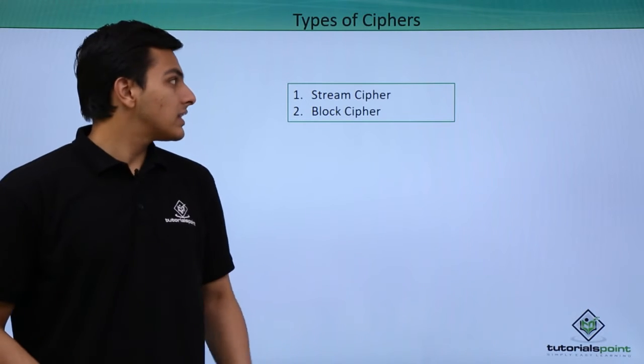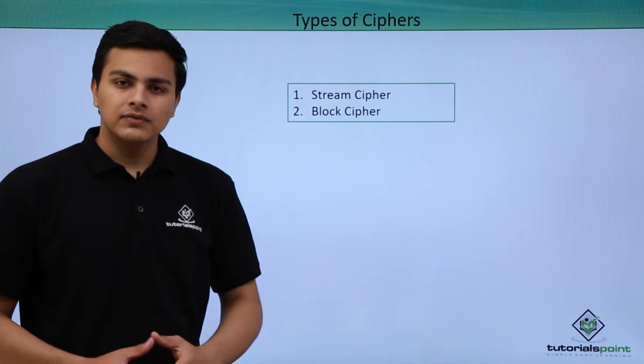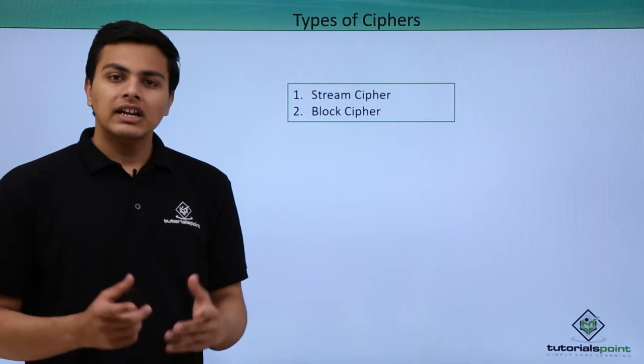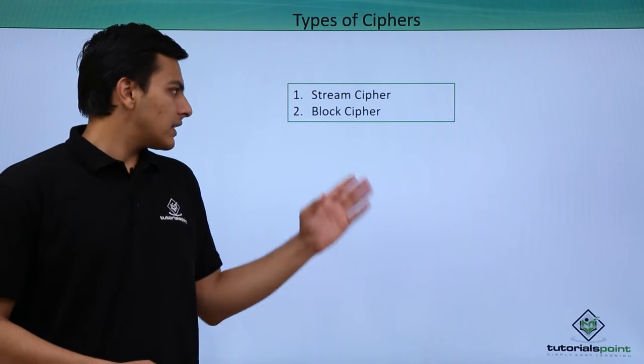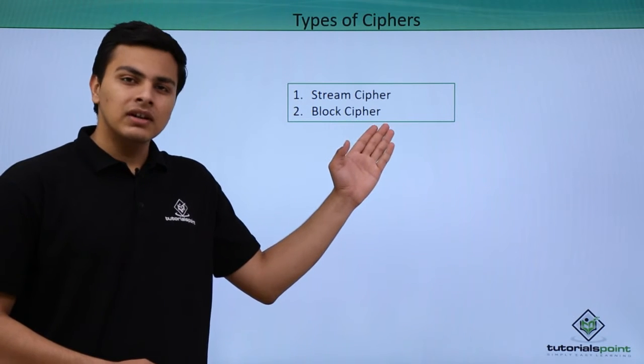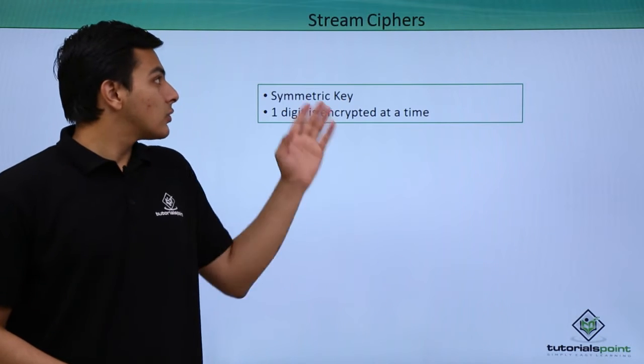Now we will discuss about types of ciphers first. There are two types of ciphers: the first one is stream cipher and the second one is block cipher.